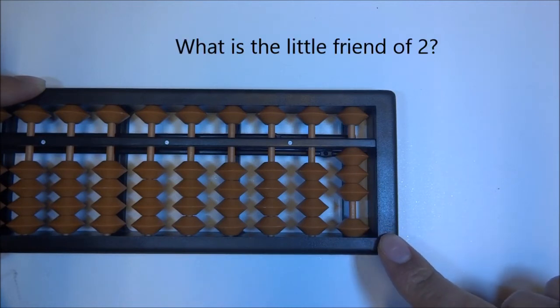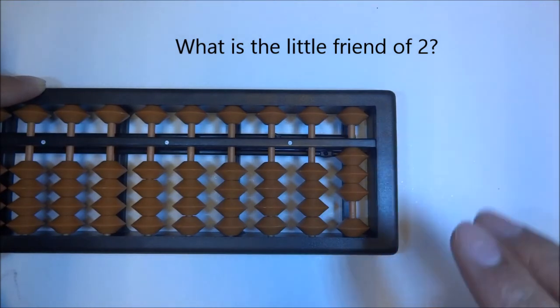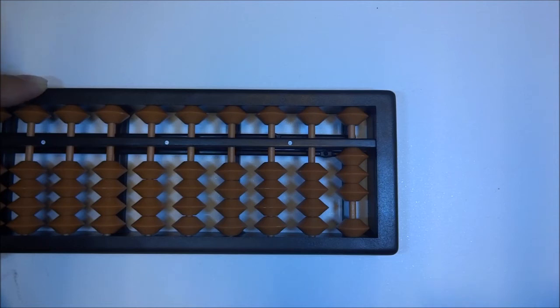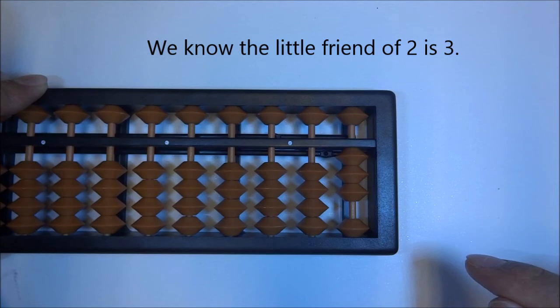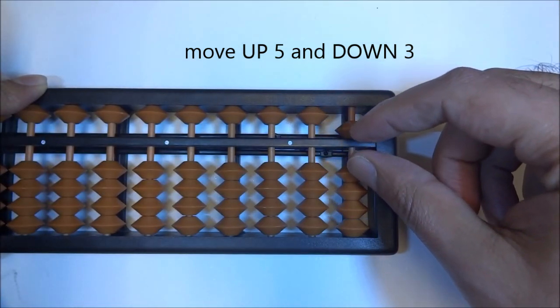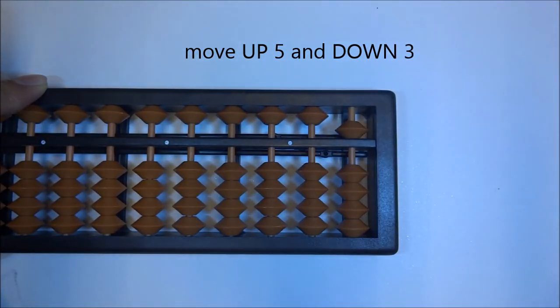We're going to find a little friend of 2. 3 plus 2. So let's find a little friend of 2, which is 3. So what are we going to do? Up 5, down 3. Up 5, down 3. And there we go. 3 plus 2 is 5.